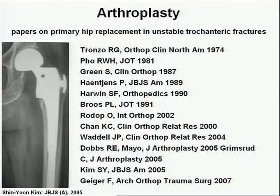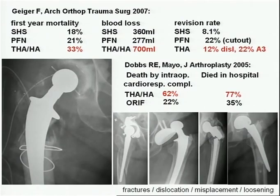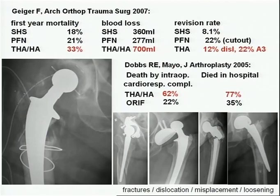Some authors treat unstable inter- and sub-trochanteric fractures with primary hip arthroplasty, arguing they had poor results with internal fixation. But if you look at these papers closely — the last one from 2007 — the authors showed a first-year mortality higher than in the ORIF group, more blood loss, and about the same complication rate, with a remarkable 22% complication rate in the IM nailing group.